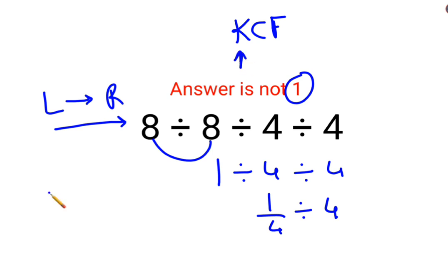KCF stands for: K - keeping the first fraction as it is, C - changing the division sign to multiplication, and F - flipping or taking reciprocal of 4 which is 1 upon 4. So the answer for this question is supposed to be 1 by 16.